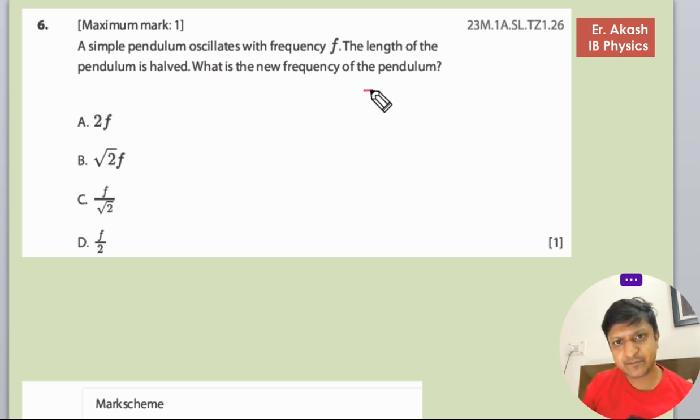So there is a pendulum like this and it is rotating like this, and then this pendulum length has been shortened. So this is l and mass is m, and this is l by 2 and mass remains the same.